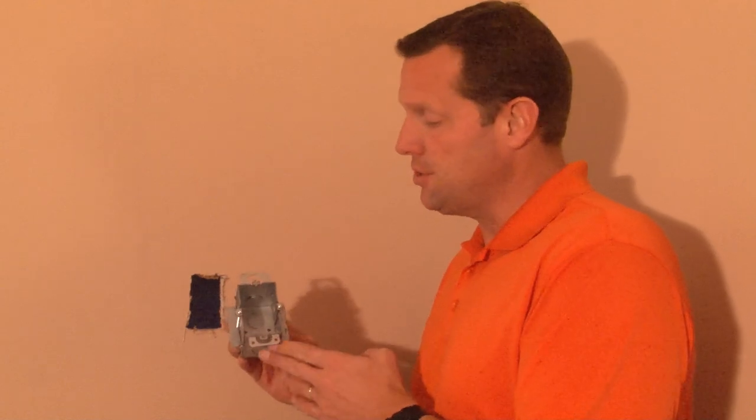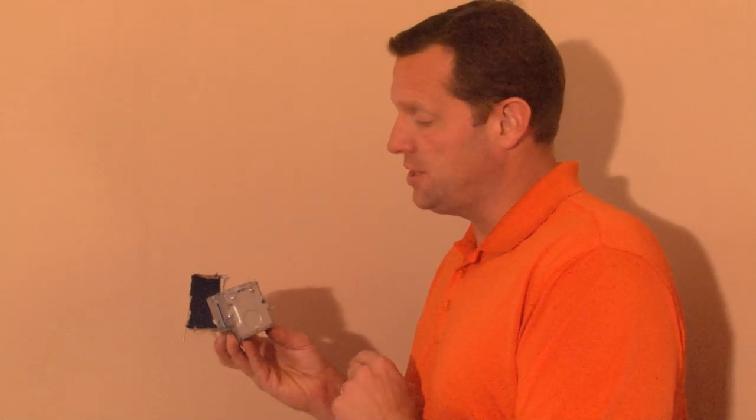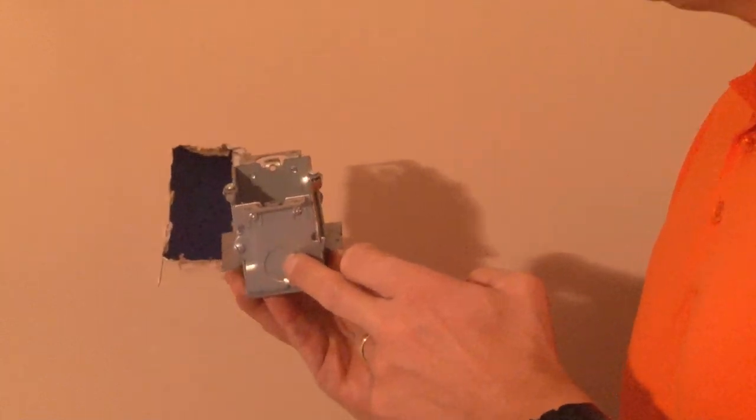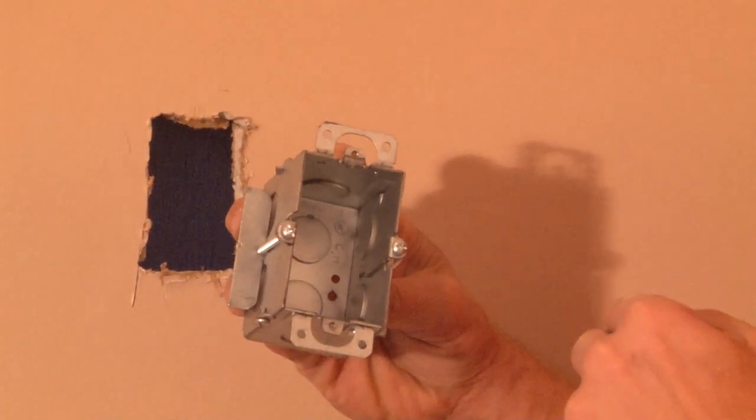Part number G601-OW is a switch box with plaster ears that's 2 1/2 inches deep and has half-inch knockouts on the sides, the ends, and the bottom of the box.